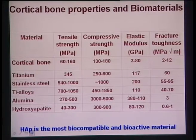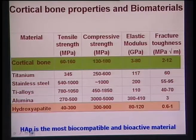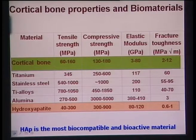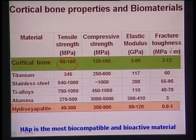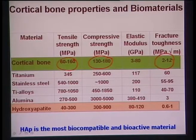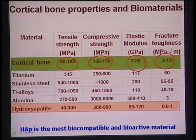Development of new-generation biomaterials is driven by certain factors. Looking at cortical bone, depending on anatomical location, the range of properties includes tensile strength 60–160 MPa, compressive strength 130–180 MPa, fracture toughness 2–12 MPa√m, and elastic modulus 3–80 GPa.